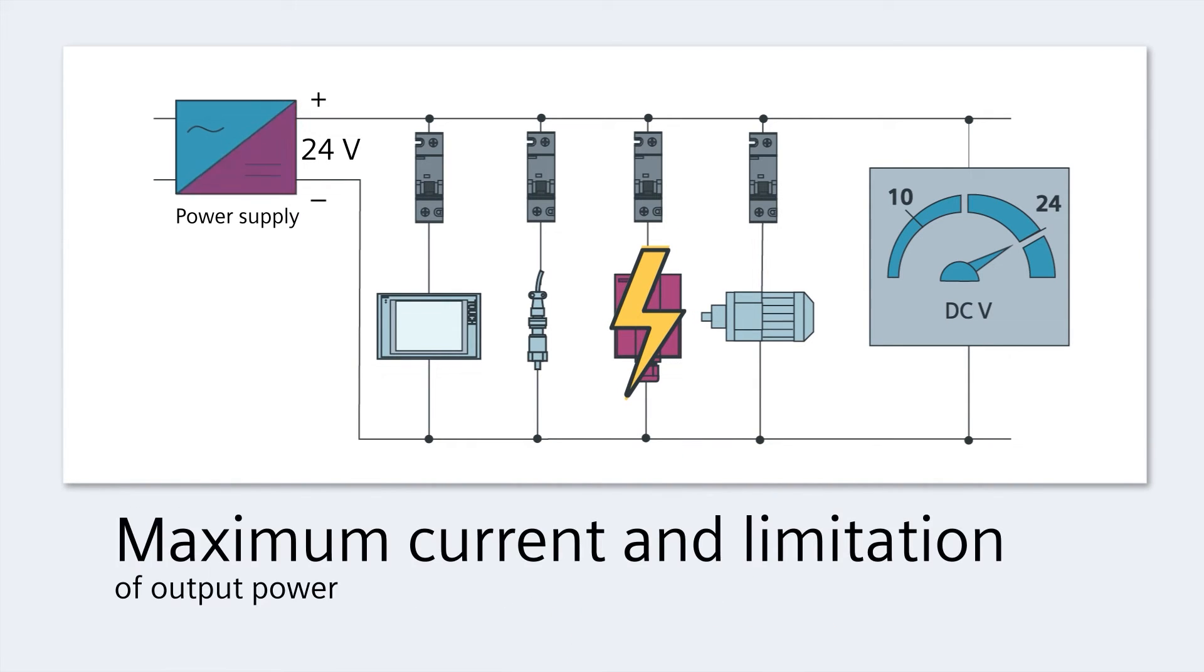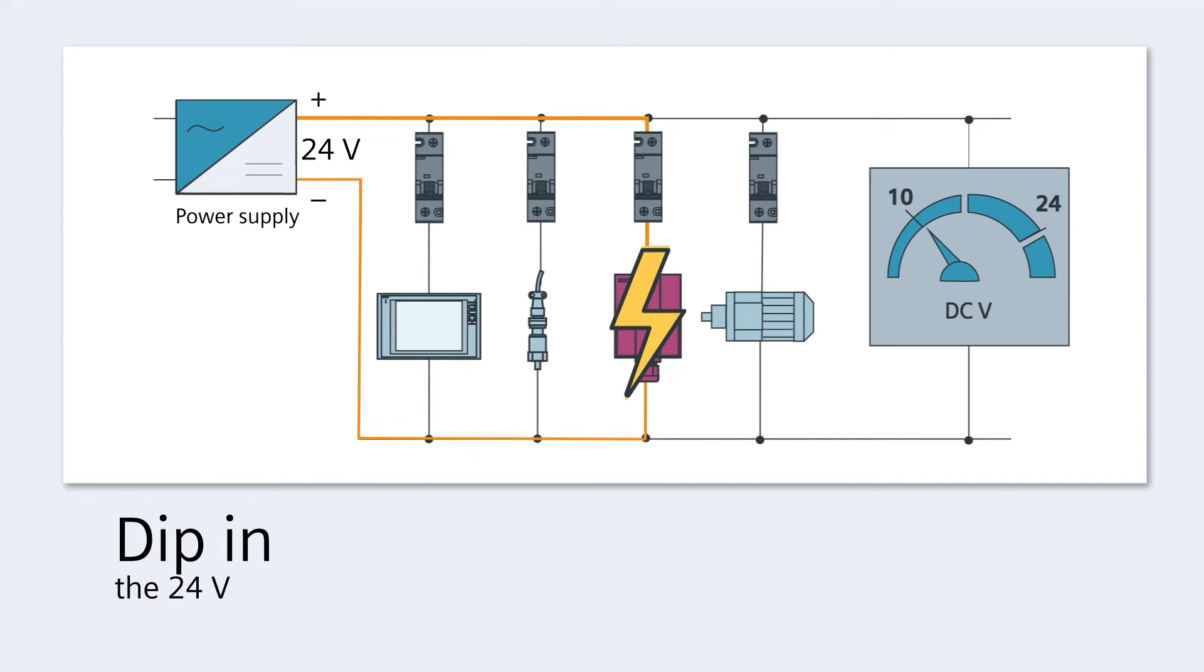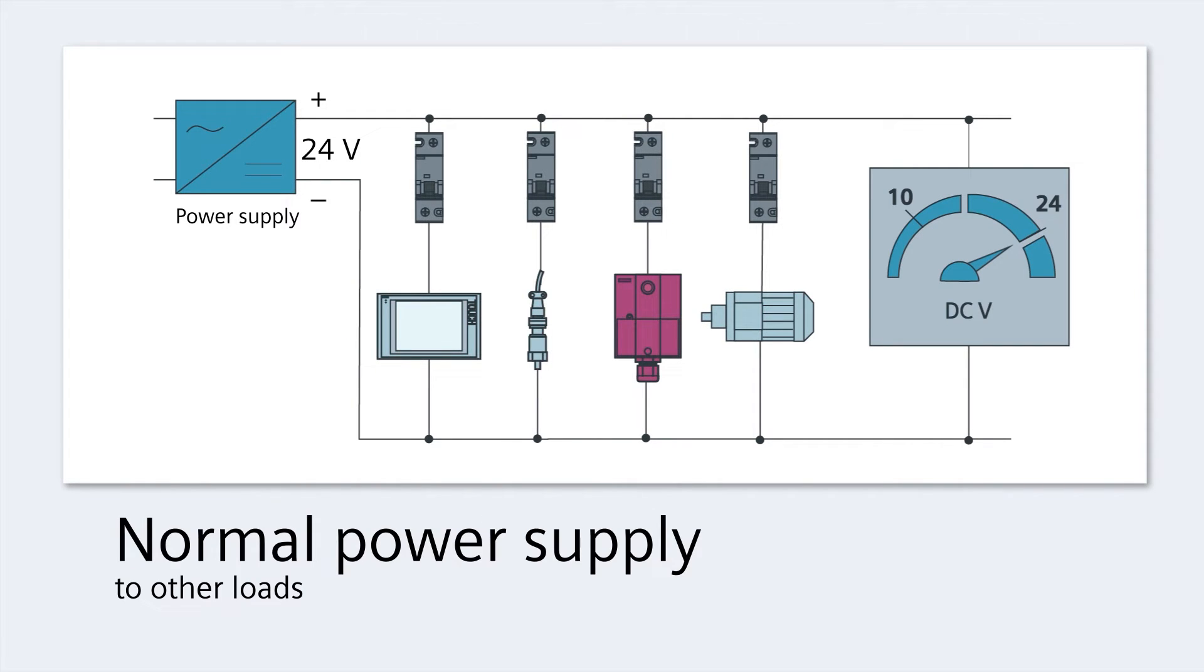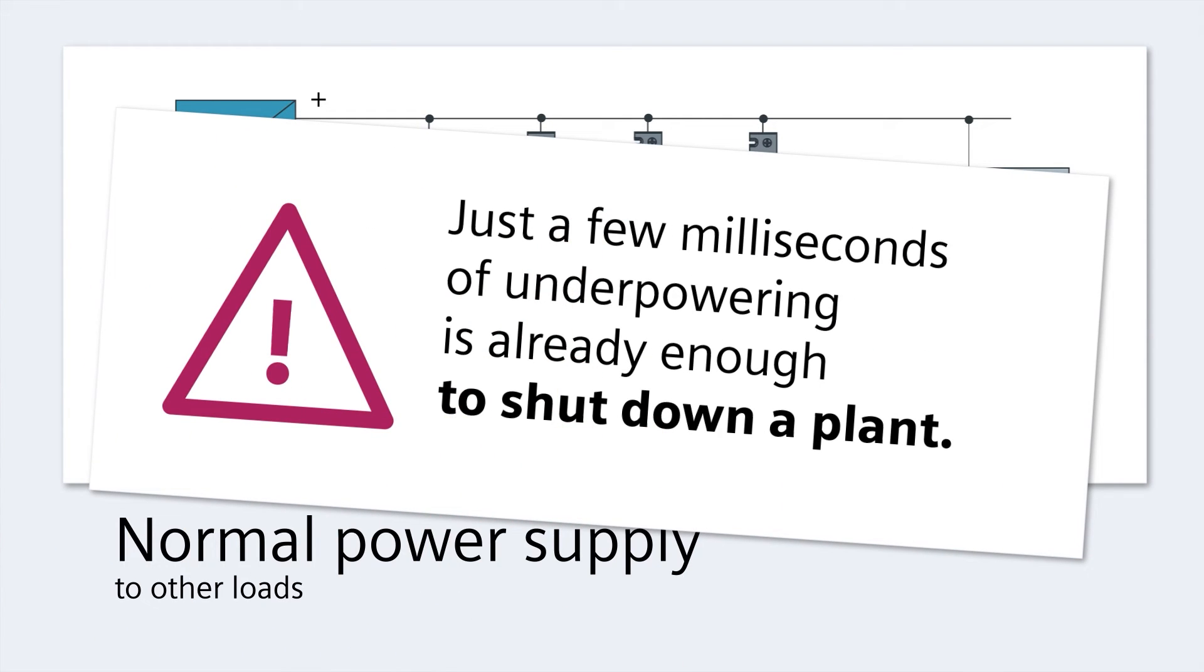The power supply delivers the maximum current and limits the output power. There's a dip in the 24 volts so that all the load circuits are underpowered. But there's often a delay before the miniature circuit breaker trips. This is due to its thermal magnetic tripping characteristic. Just a few milliseconds of underpowering is already enough to shut down a plant.